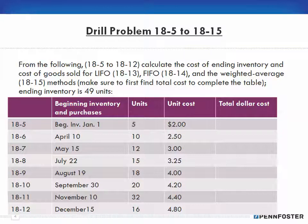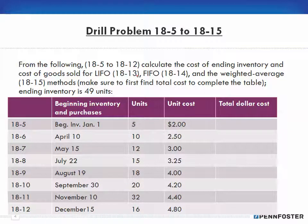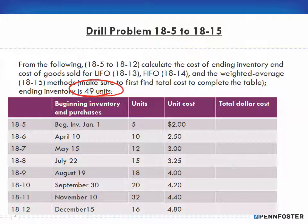From problems 18-5 to 18-12, we need to calculate the cost of the ending inventory and cost of goods sold: LIFO for problem 18-13, FIFO for 18-14, and weighted average for 18-15. Make sure to first find the total cost to complete the table. Ending inventory is 49 units.